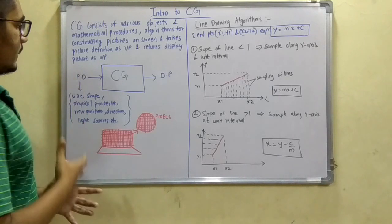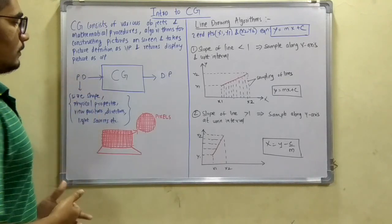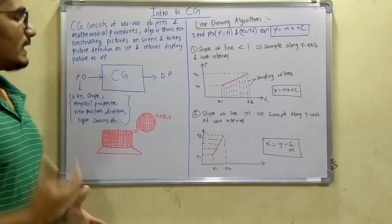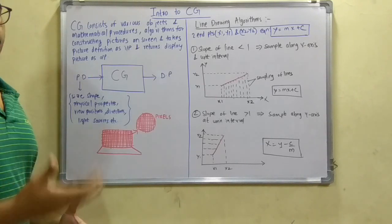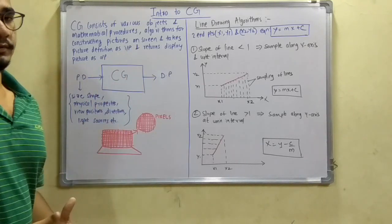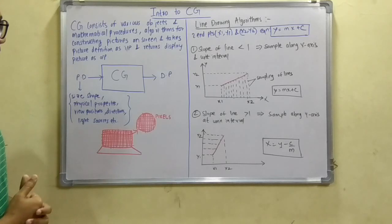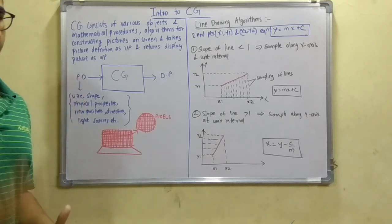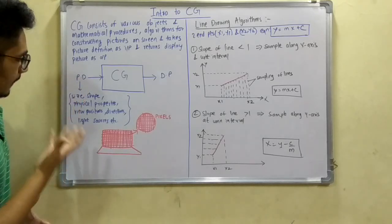There's a small diagram depicting this definition. It will take PD, that is picture definition, as its input, thread into a CG engine or machine, and produce the display picture. This picture definition is mainly dependent upon the following parameters...